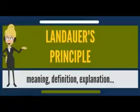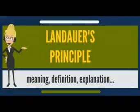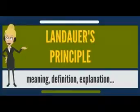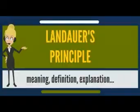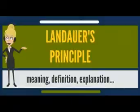If the number of possible logical states of a computation were to decrease as the computation proceeded forward — logical irreversibility — this would constitute a forbidden decrease of entropy, unless the number of possible physical states corresponding to each logical state were to simultaneously increase by at least a compensating amount, so that the total number of possible physical states was no smaller than originally. An increase in the number of physical states corresponding to each logical state means that, for an observer tracking the logical state but not the physical state, entropy has increased. The maximum entropy of a bounded physical system is finite.